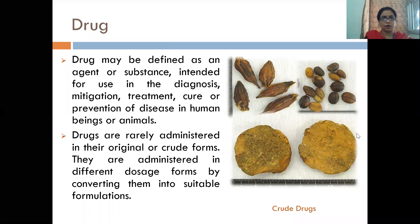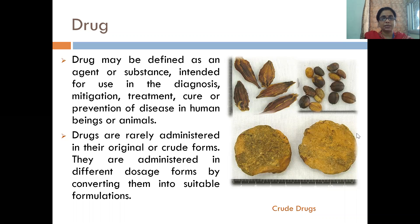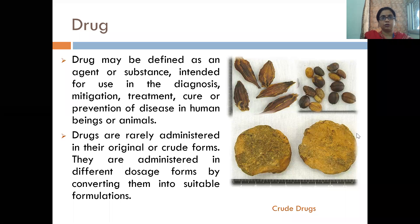What is drug? Drug may be defined as an agent or substance intended for use in the diagnosis, mitigation, treatment, cure and prevention of disease in human beings and animals. In the house, we often say that there are a lot of drugs. These are called crude drugs. But if we remove extracts from them and refine them, then our drug comes into its constituents.